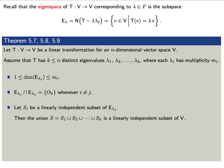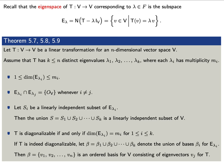If each S sub i is a linearly independent subset of the eigenspace E sub lambda i, then the union of the S sub i's is also a linearly independent subset of the vector space V. Finally, t is diagonalizable if and only if the dimension of each eigenspace is as large as possible — that is, the dimension of E sub lambda i equals the multiplicity m sub i for every i.